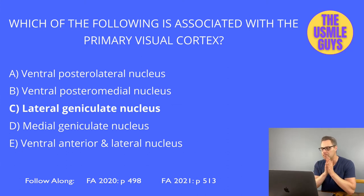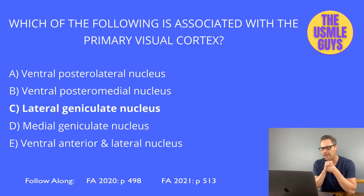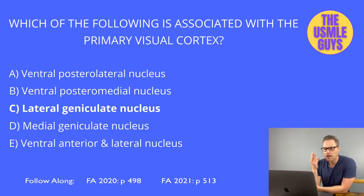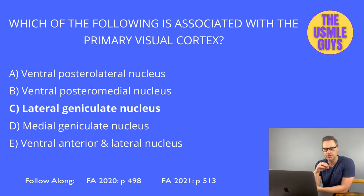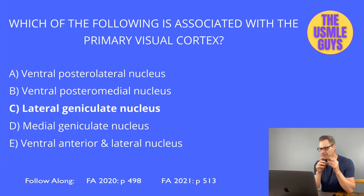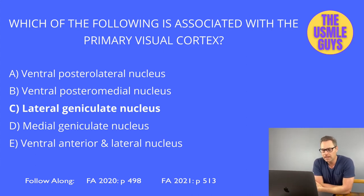The thalamus is the major relay center for all ascending sensory information except olfaction. The ventral posterior lateral nucleus receives input from the spinothalamic tract and dorsal columns/medial lemniscus, and is responsible for vibration, pain, pressure, conscious proprioception, light touch, and temperature. Its destination is the primary somatosensory cortex in the parietal lobe. The ventral posterior medial nucleus receives input from trigeminal and gustatory pathways, handling taste and facial sensations, also projecting to the primary somatosensory cortex. The lateral geniculate nucleus receives input from cranial nerve 2, the optic chiasm, and optic tract, and its destination is the primary visual cortex in the occipital lobe.